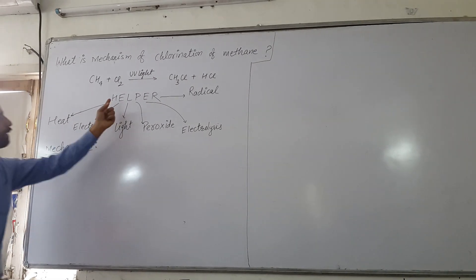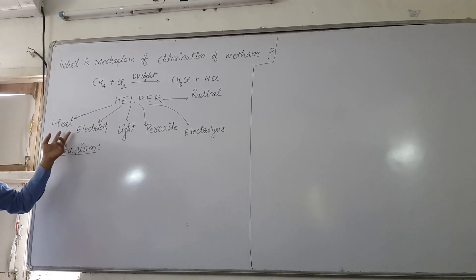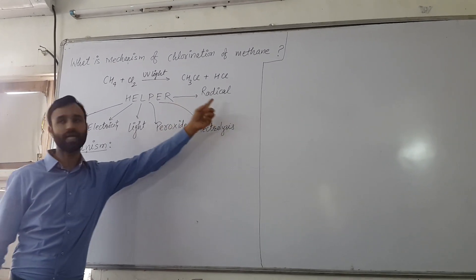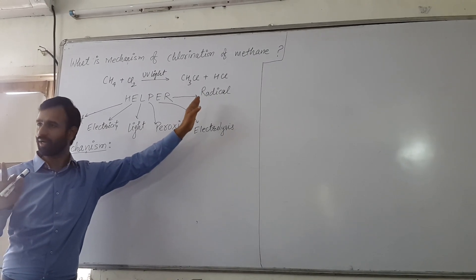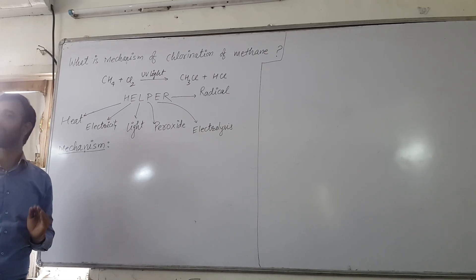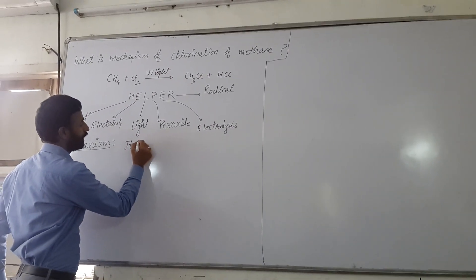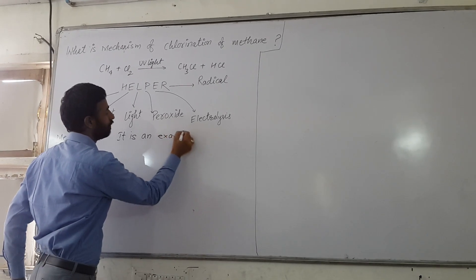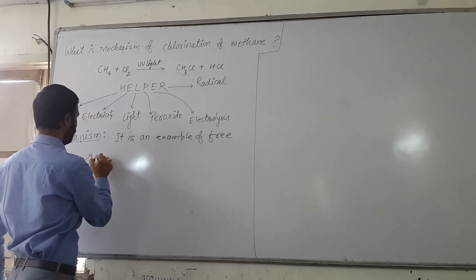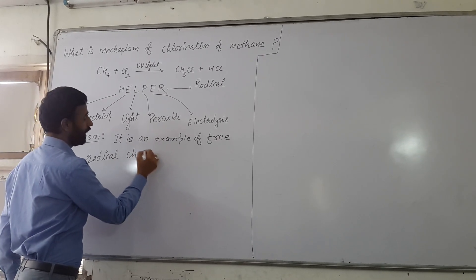We should keep in mind the word HELPER. HELPER means heat, high temperature, electricity, light, peroxide, electrolysis, radical initiator. If any of these conditions are present, then the mechanism is free radical. So the mechanism of this reaction is free radical, or more specifically, free radical chain reaction.